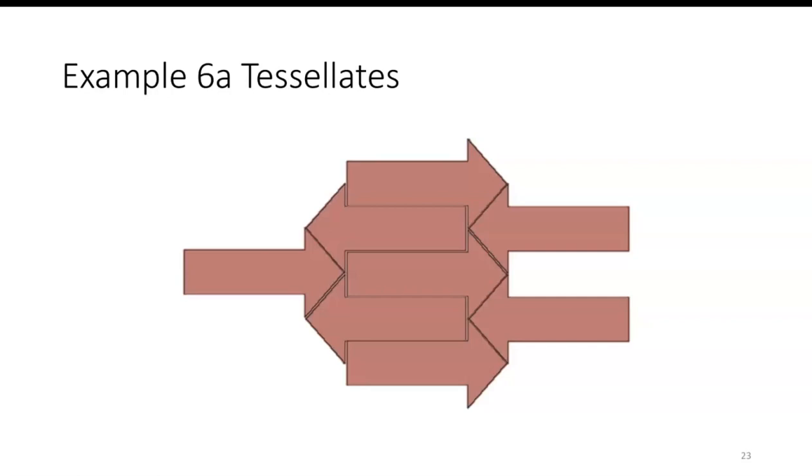But for part A, that does tessellate. Here is an example of putting together those pieces, those different arrows. You can see that you could form a tessellation.